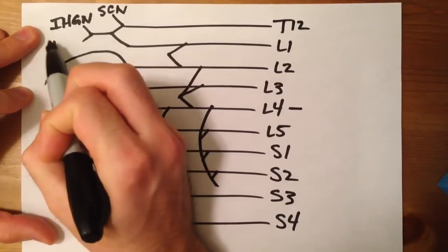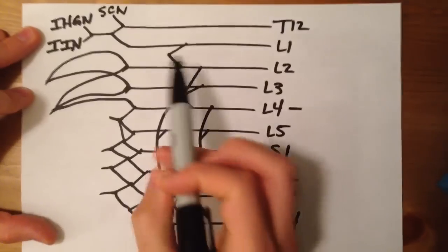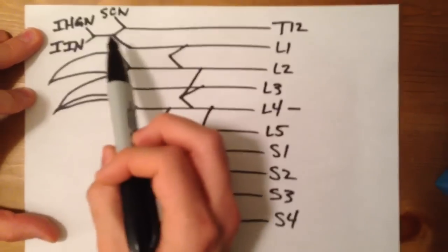And then this one's going to be your ilio-inguinal nerve. So those are both T12 and L1.